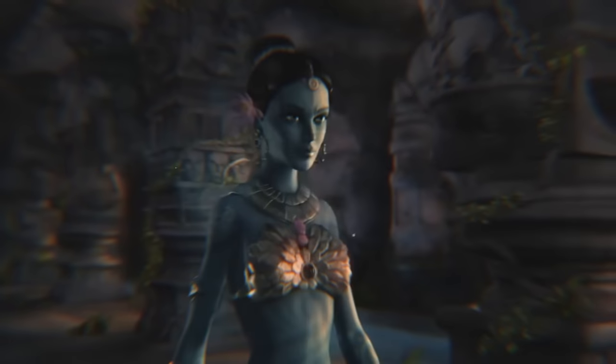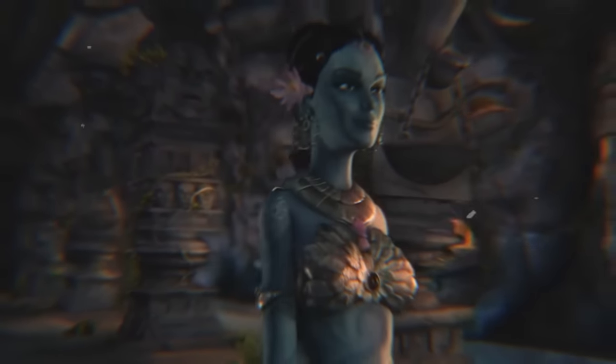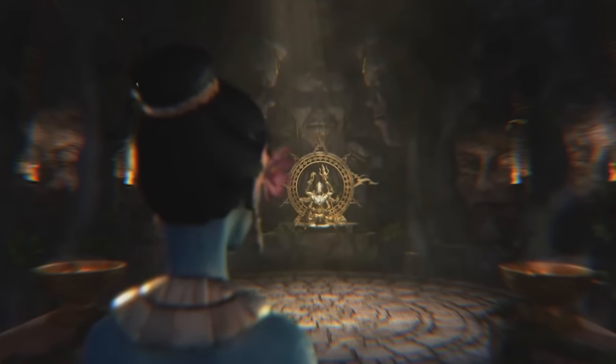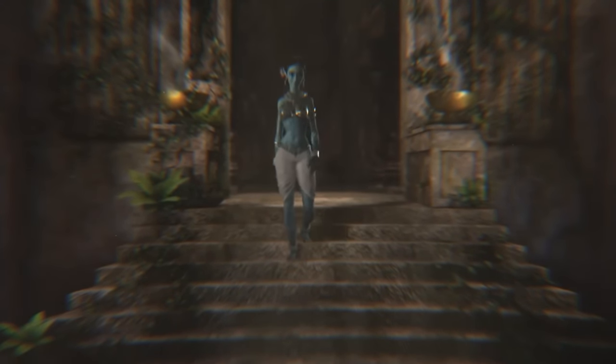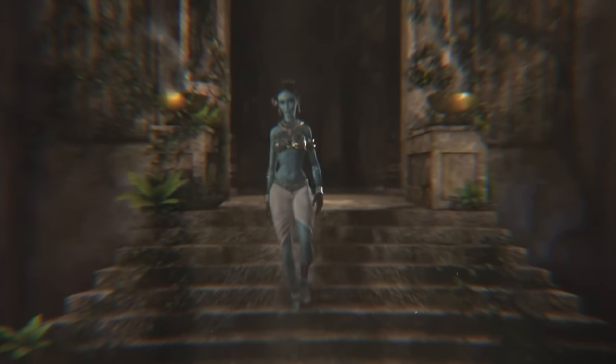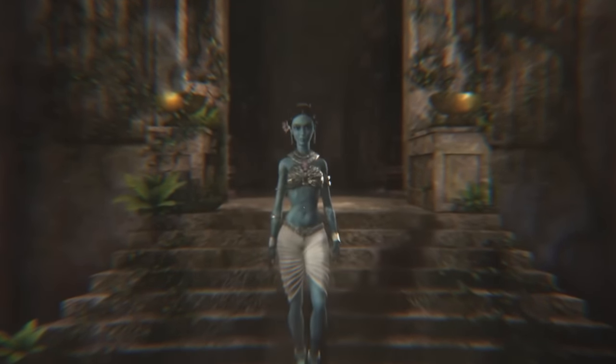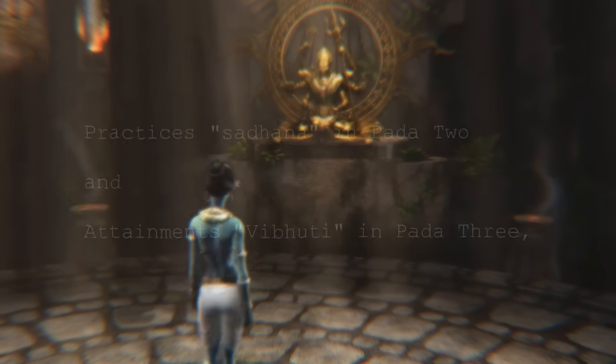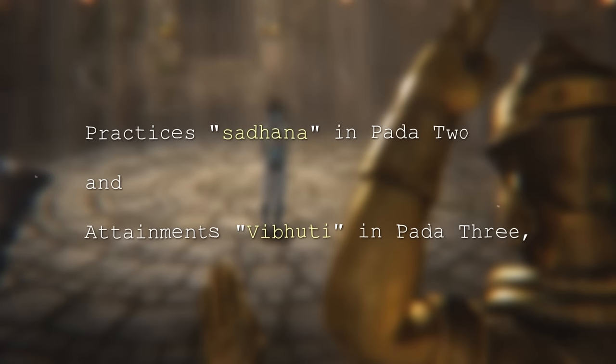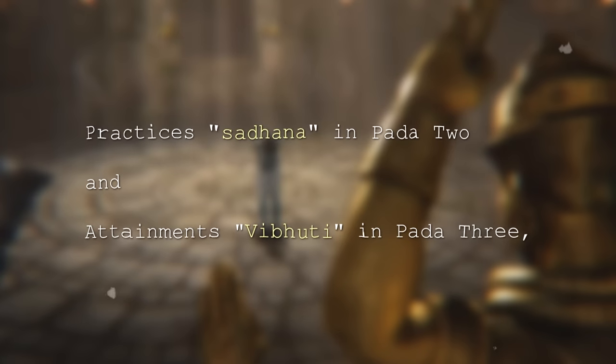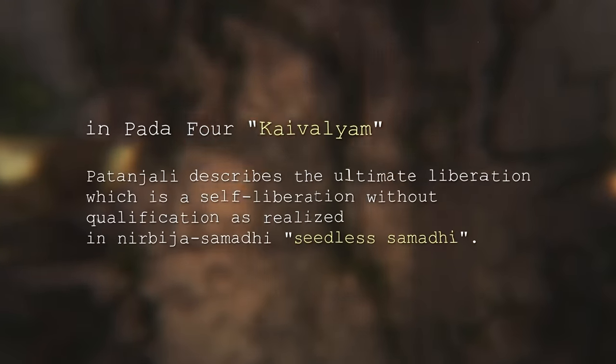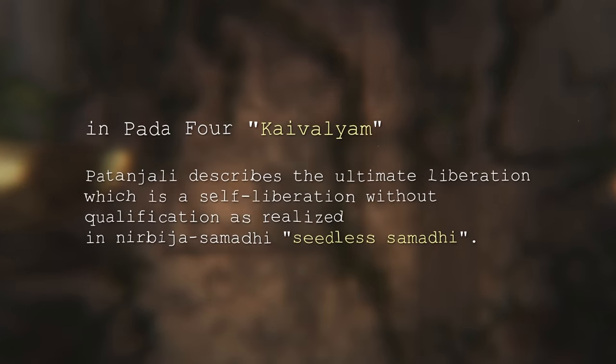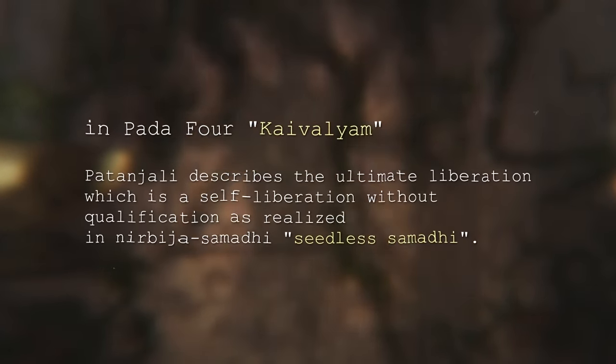Having explained the general assumptions in Pada 1, defining yoga and Samadhi as a transconceptual alignment, communion, harmonization, transubstantiation and holistic transpersonal non-dual integration, explaining the practices Sadhana in Pada 2 and the attainments Vibhuti in Pada 3, here in Pada 4 Kaivalyam, Patanjali describes the ultimate liberation, which is a self-liberation without qualification as realized in Nirbija Samadhi, seedless Samadhi.